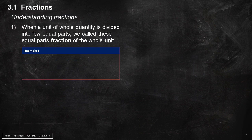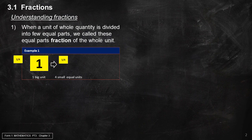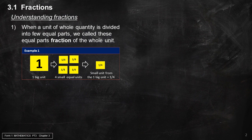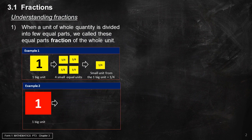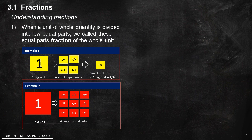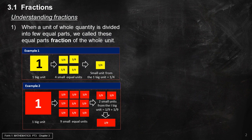Example 1: When one big unit is divided into 4 smaller equal units, this small unit is called 1 over 4 of the big unit. When two small units of 1 over 9 are added, it will become two larger units, or 2 over 9.